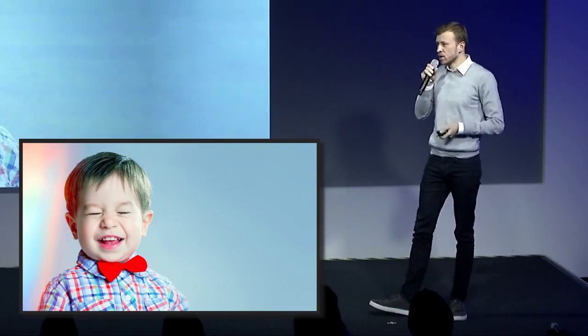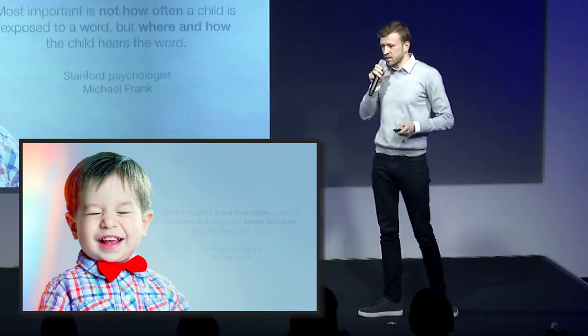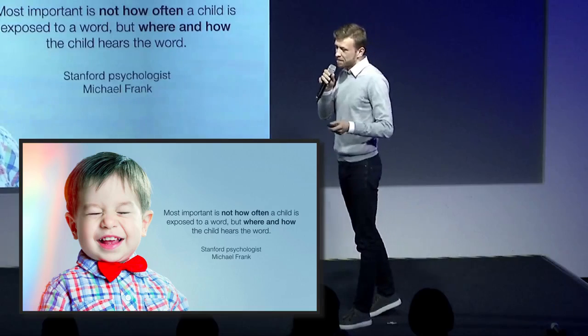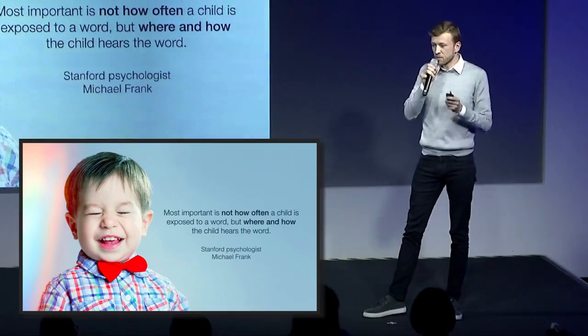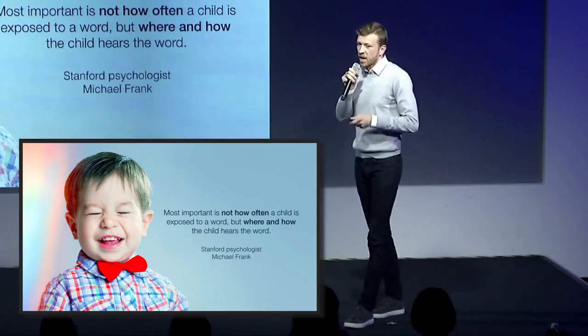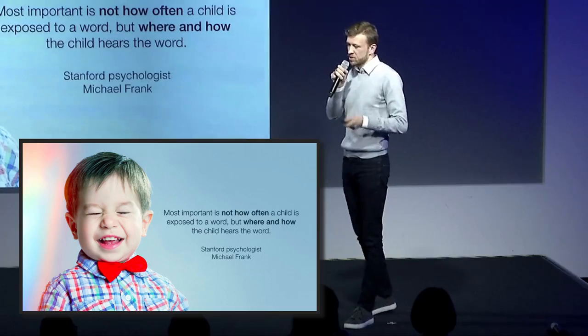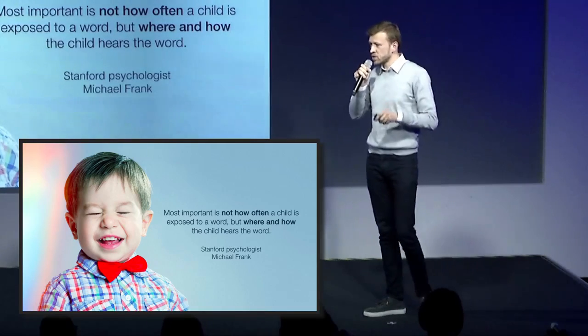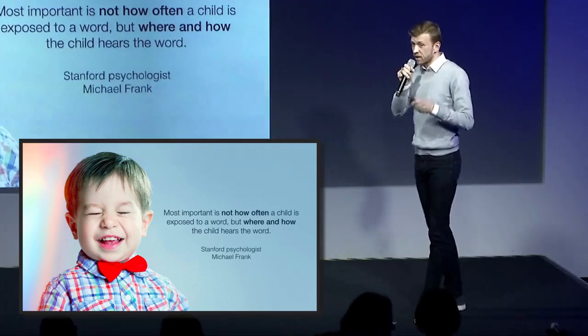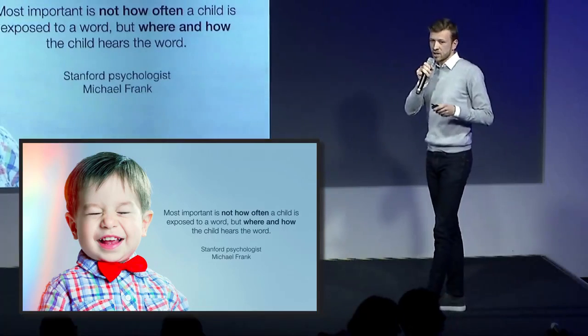Let's take a look at the basics of how we learn a language. How do children learn a language? And what is the most efficient way for them to memorize words? The University of Stanford did research just on that. They say that most important is not how often a child is exposed to a word, but where and how a child hears the word — meaning a child learns much more efficiently when in the environment they are learning about.